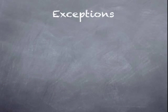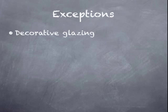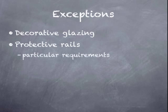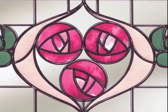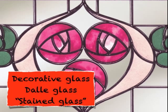There are some exceptions to safety glazing to look at. The first one is decorative glazing, and the second one is the installation of a protective rail in front of the window, which has its own particular requirements. This is stained glass — what we typically call it — but the code refers to this as decorative glass or doll glass. Essentially, if it's made up of small individual pieces that are meant for artistic reasons, then it is an exception from safety glazing. The IRC recognizes that it would not be feasible to have this type of artistic glass tempered or covered in a film. Also, the small pieces naturally mean that there's less mass and geometry to inflict injury.